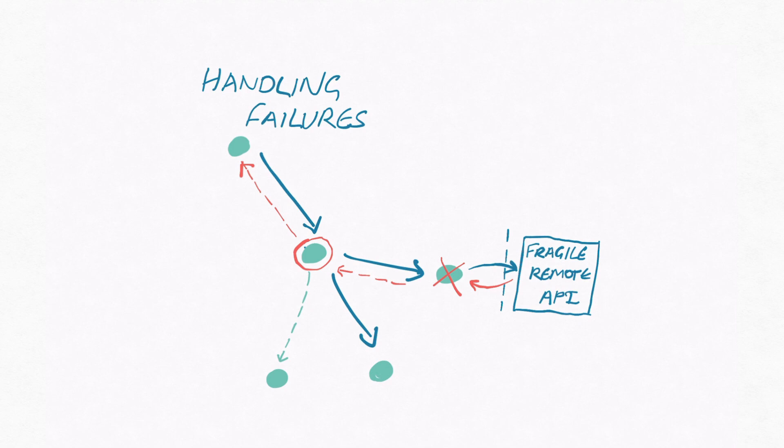The error kernel pattern encourages you to delegate dangerous operations, such as remote calls to external APIs, to actors that isolate their parent actor from exceptions or failures that may occur.